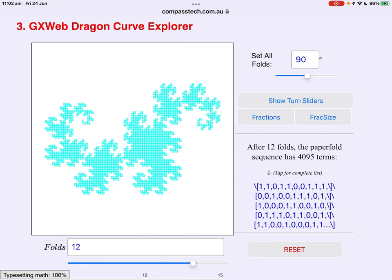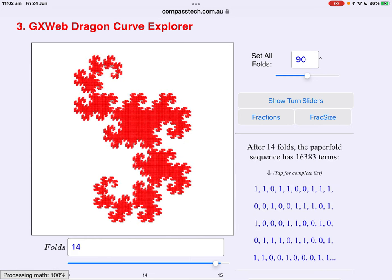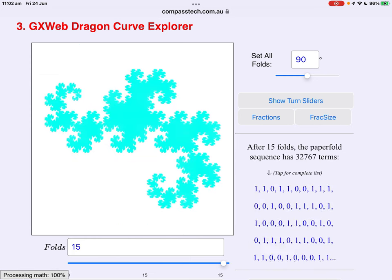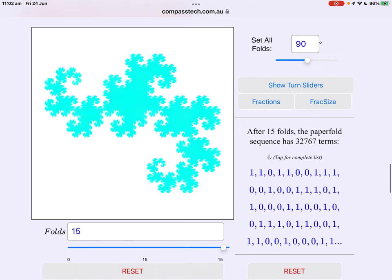This model will take you all the way up to fifteen folds which doesn't sound like many until you realise that at fifteen folds there are thirty-two thousand seven hundred and sixty-seven terms. In other words, if you were able to fold a piece of paper fifteen times there'd be almost thirty-three thousand folds on your page which helps to explain why it's considered impossible to fold more than a few times.